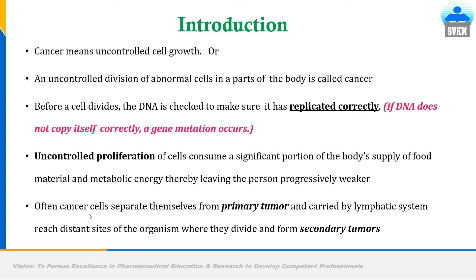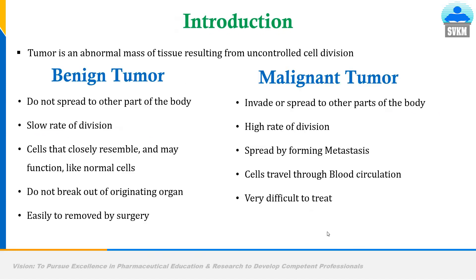Often, cancer cells separate themselves from the primary tumor, and that primary tumor is carried via the lymphatic system — via blood — and reaches different sites where it divides and forms a secondary tumor. It is very necessary to understand what tumor means. A tumor is an abnormal mass of tissue which results from uncontrolled cell division and cell proliferation. Based upon the severity of the tumor, it is classified into two types.